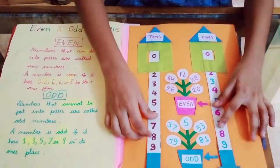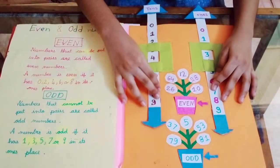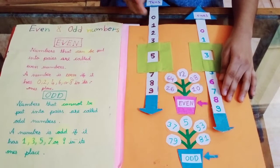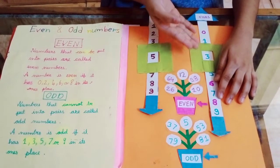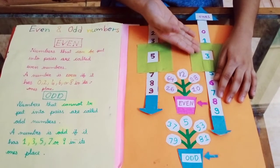53. 53 is an odd number because 3 is in the ones place and 3 is an odd number.